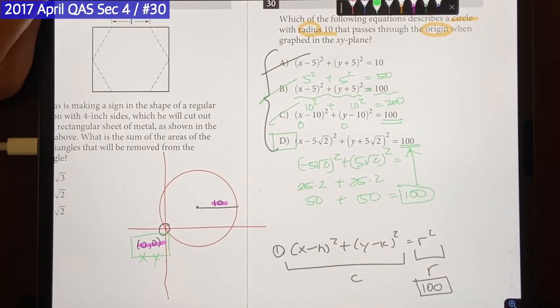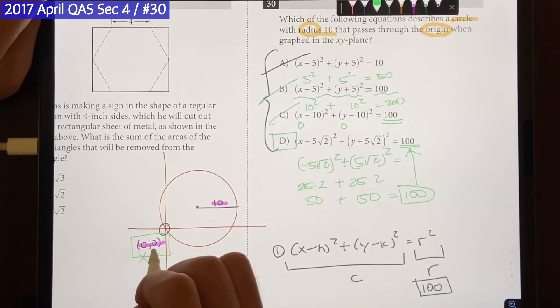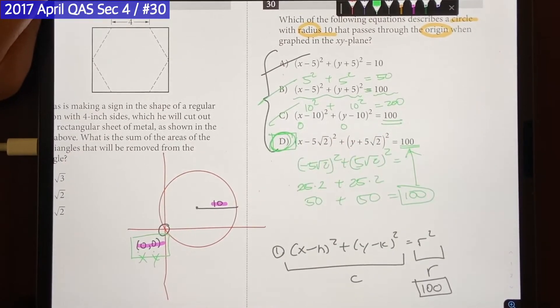When added up we get 100 which matches up with our right side. The equation is true. Therefore the equation contains 0, 0. So choice D is going to be the answer.